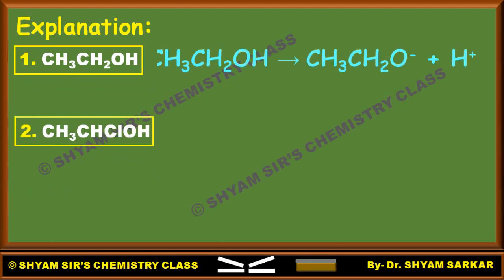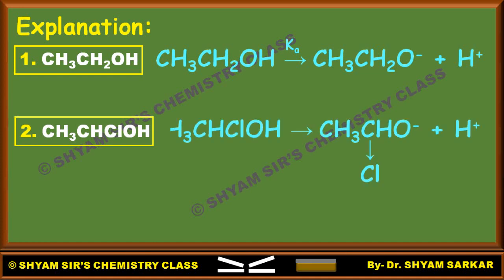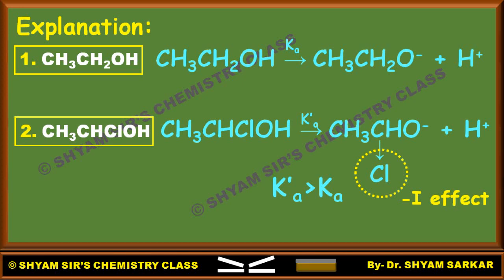Ethanol dissociates into ethoxide ion and H⁺ ion, with dissociation constant KA. Chloroethanol has dissociation constant KA prime. In the chloro case, one chloro group at the C1 position has a minus-I effect, so more H⁺ will be released, making chloroethanol more acidic than ethanol. Therefore, KA prime is greater than KA.